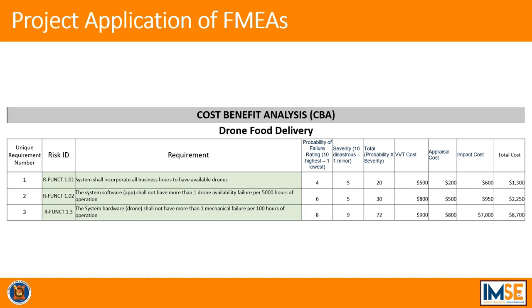This shows the first three requirements from the cost-benefit analysis that each team submitted. The first column after the requirement shows the probability of failure, rated from 1 to 10 — one being the lowest, ten being the highest. We then rated severity to get the total probability-severity product, as well as the appraisal cost and impact cost. The next actions for our teams will be to identify the most severe risks and potential failures to take corrective actions on them.